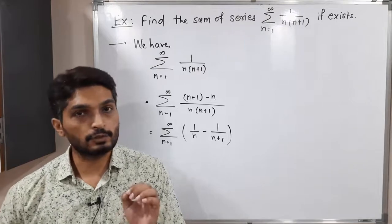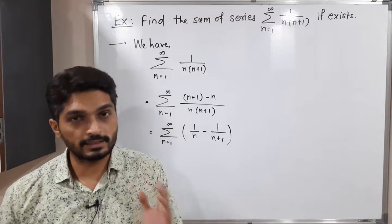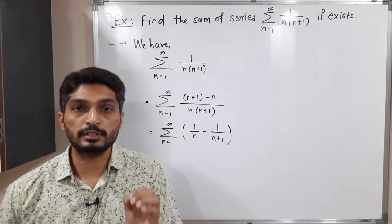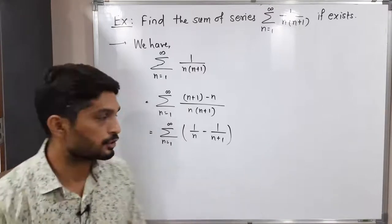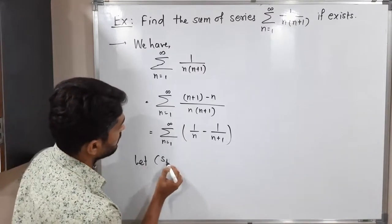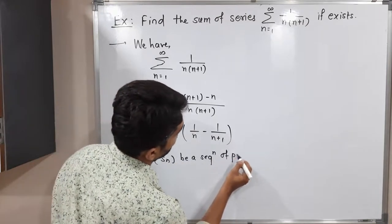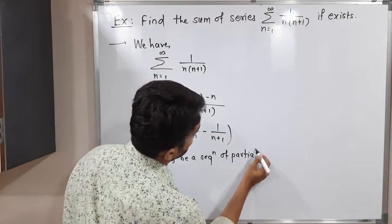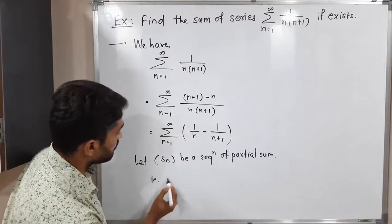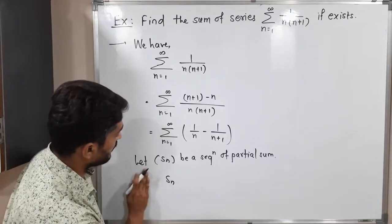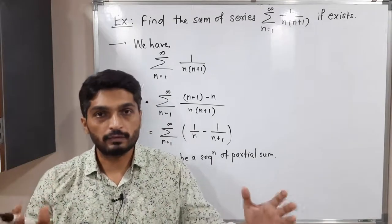We will consider a sequence of partial sums. Since we know that if the sequence of partial sums is convergent we say the series is convergent, and if the sequence of partial sums is divergent we say the series is divergent. Let S_n be the sequence of partial sums — that is, the sum of the first n terms.